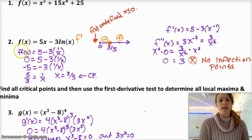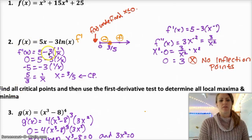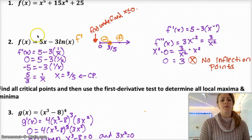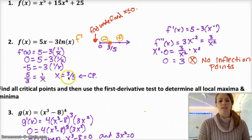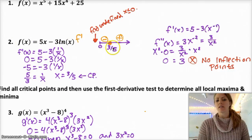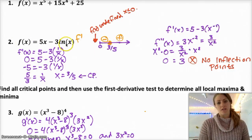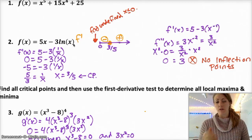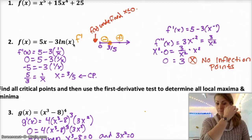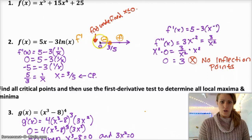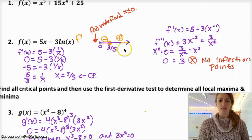For number 1, f prime is 5 minus 3 times 1 over x. If you solve that, you get x equals 3 fifths as the only critical point. Keep in mind that the natural log of x is not defined for negative numbers or 0, so there is no function at 0 or to the left of it.